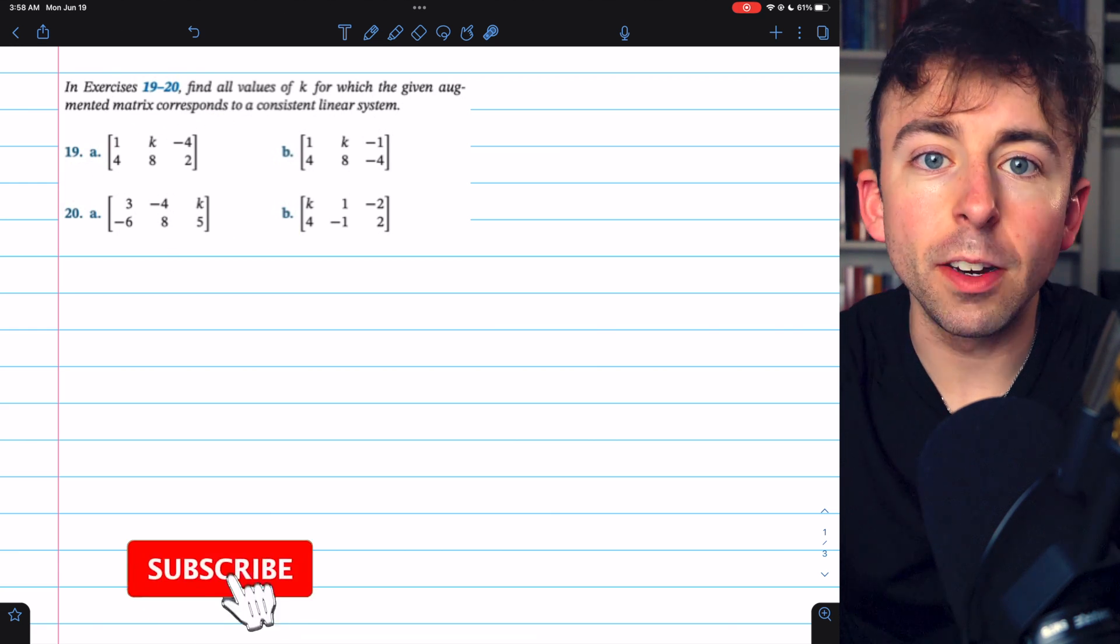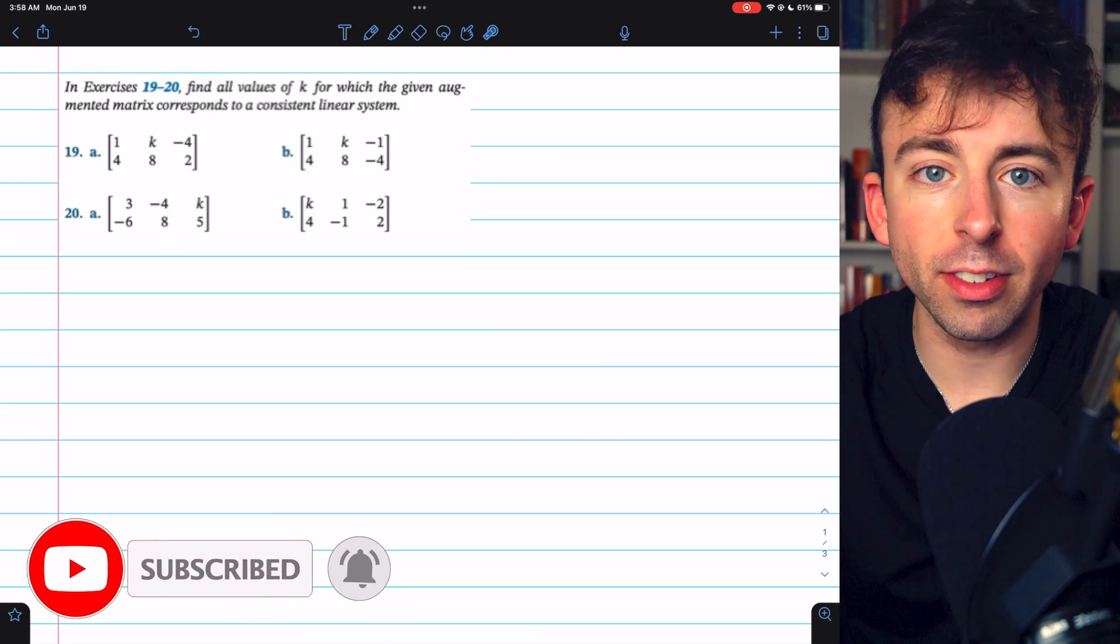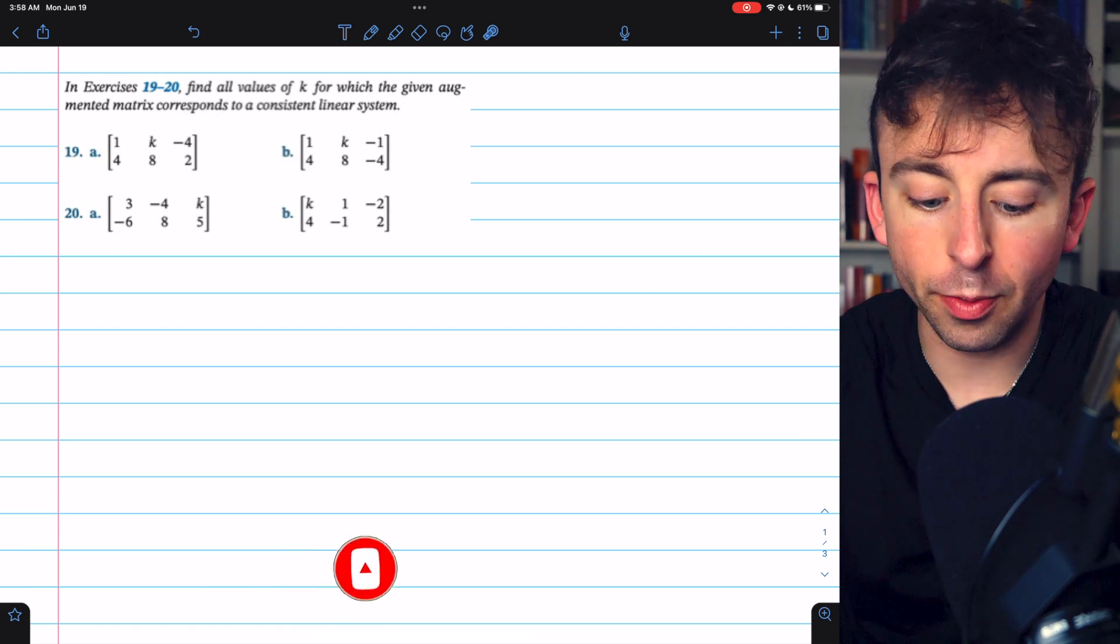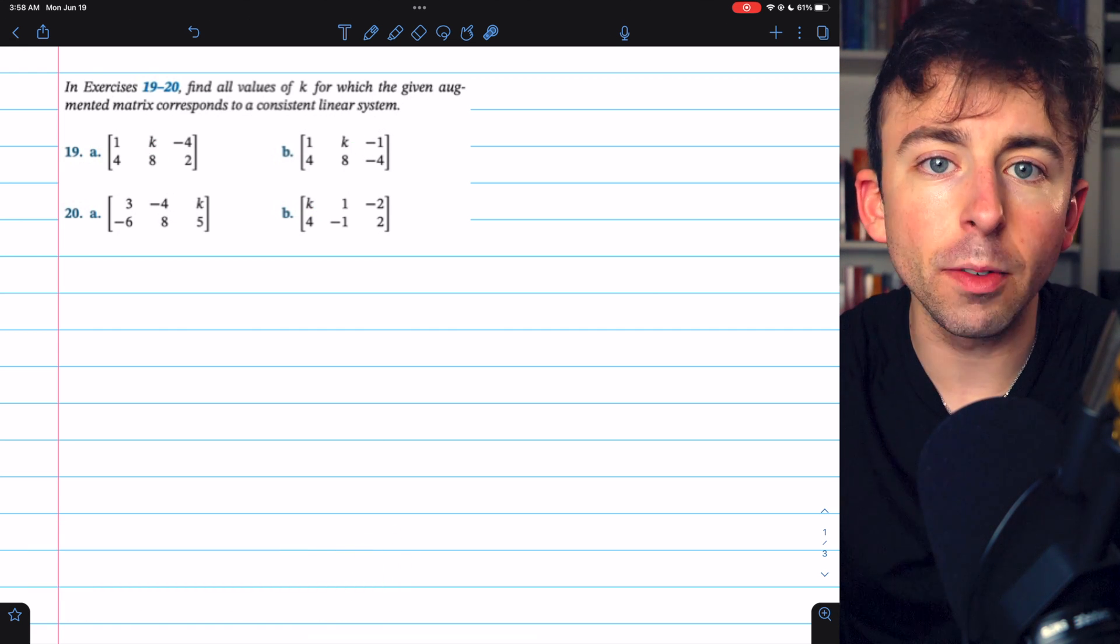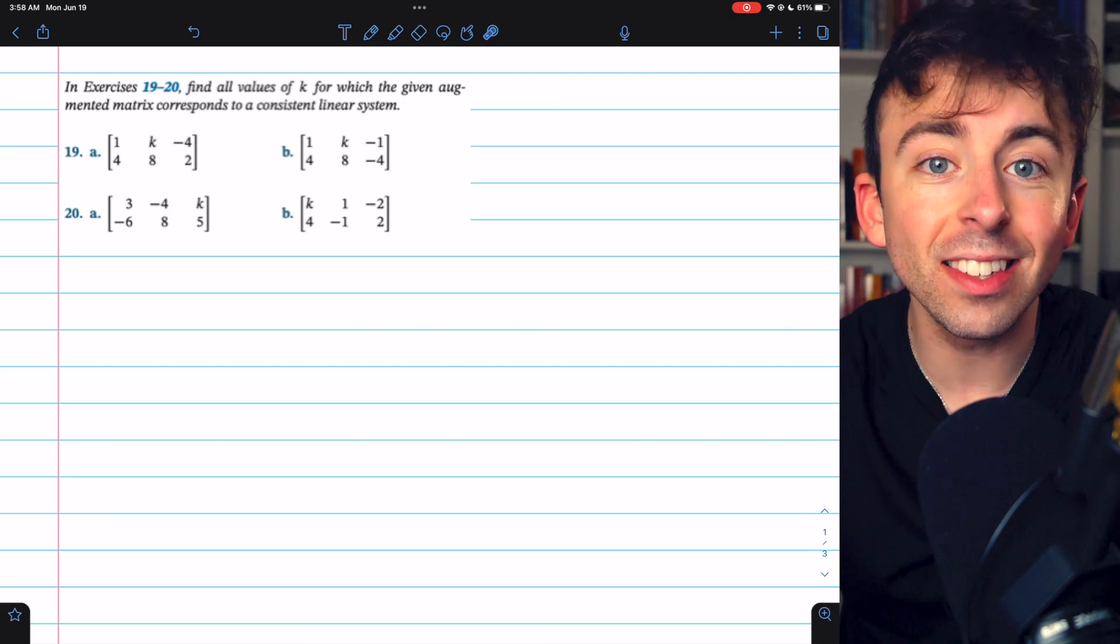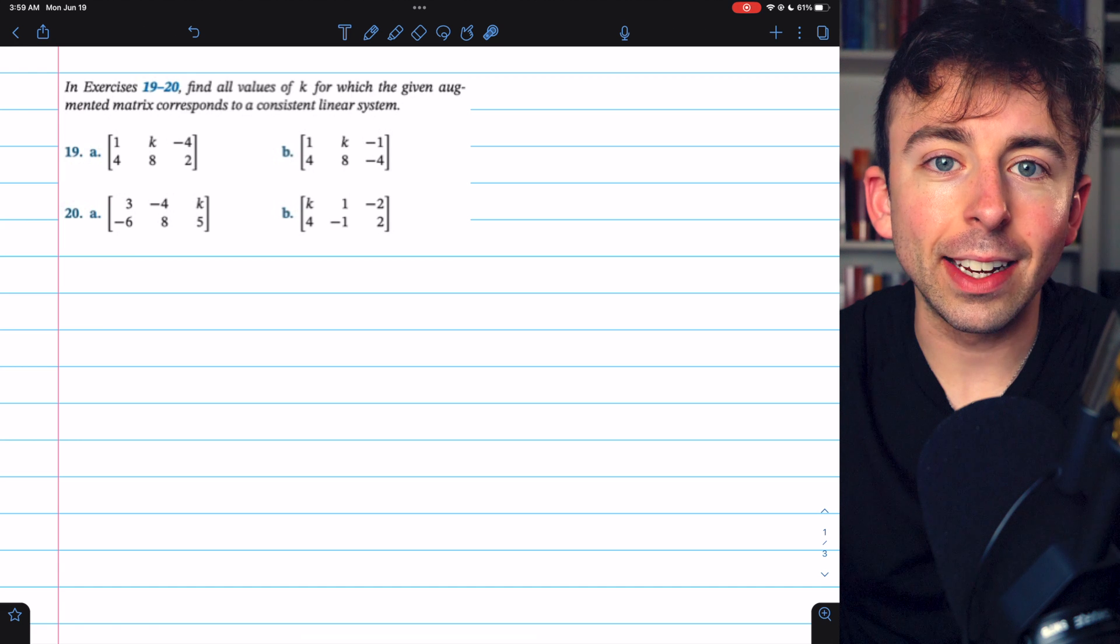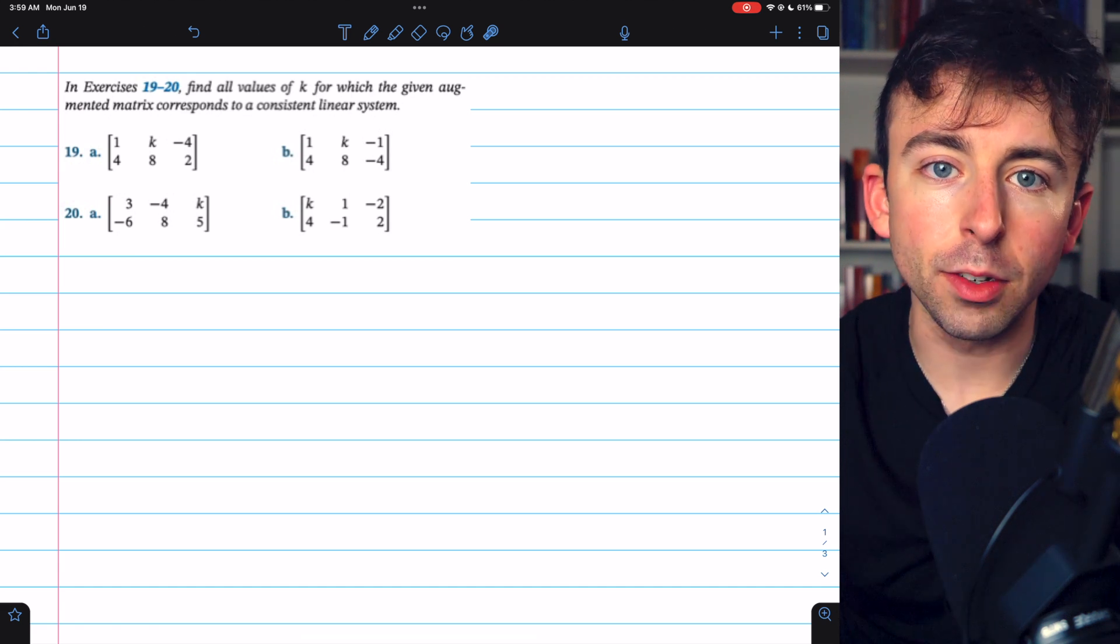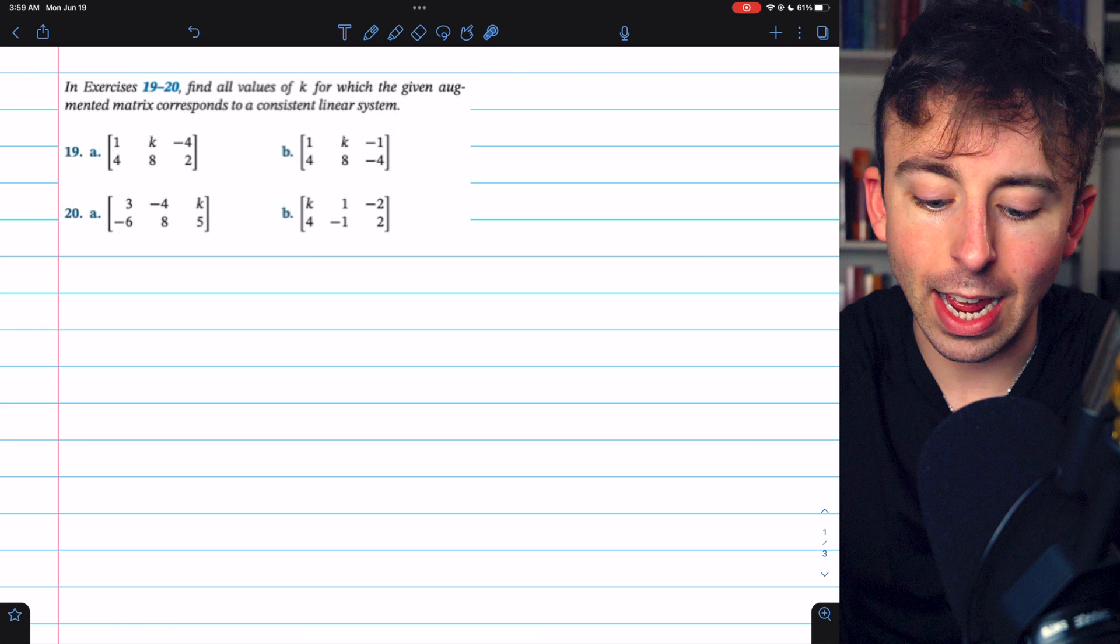Here are a few augmented matrices. Each one corresponds to a linear system of equations. We want to find the values of k for which these augmented matrices correspond to consistent systems of linear equations. These exercises are from Howard Anton's linear algebra text, link in the description. We're going to solve the first three of them, 19a and b,